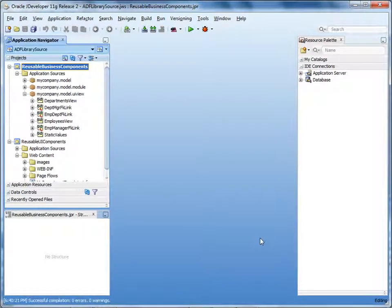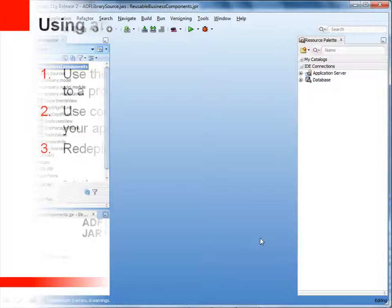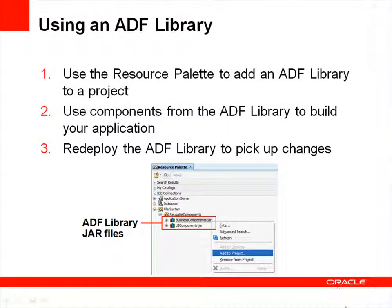Now you know how to create an ADF library. Next, let's learn how to use resources from the library. The easiest way is by adding the library resources to a project. To do this, in the resource palette, you connect to the repository where the ADF library is stored — in this example, a file system. Then you simply add the library to the current project and all components in the library become available for use. If a component in the library changes, you simply redeploy the library.